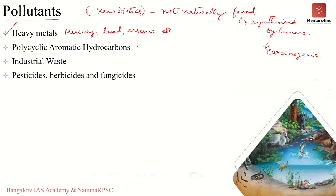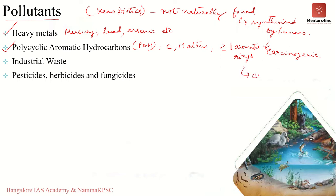The second category is polycyclic aromatic hydrocarbons (PAH). PAHs contain only carbon and hydrogen atoms and contain more than one aromatic ring — examples include naphthalene and anthracene. Exposure to polycyclic aromatic hydrocarbons may cause cancer. These PAHs enter soil from the processing of coke, vehicular emissions, or other industrial activities.